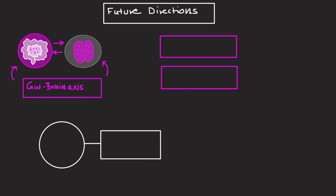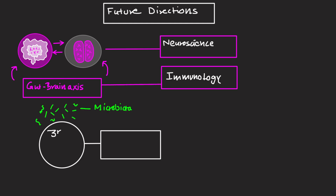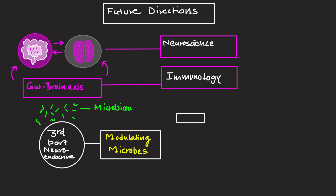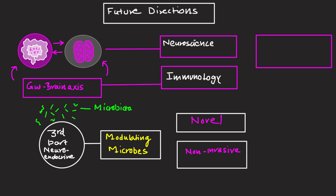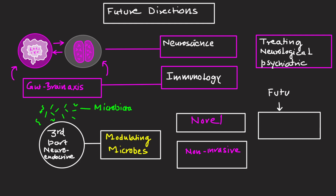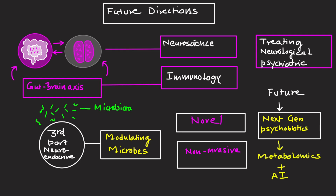The gut-brain axis represents a paradigm shift in neuroscience and immunology. The microbiota acts as a third component of the neuroendocrine system. Modulating gut microbiome composition offers a novel, non-invasive approach to treat neurological and psychiatric diseases. Future directions include personalized microbiome profiling and next-generation psychobiotics guided by metabolomics and artificial intelligence. In summary, modulating the gut microbiome offers a promising non-invasive strategy to manage neurological and psychiatric conditions.